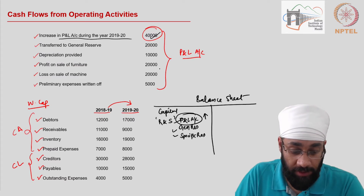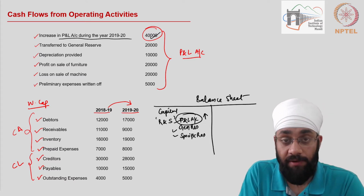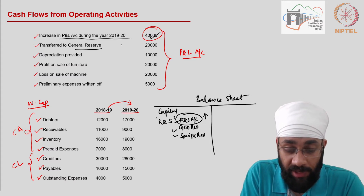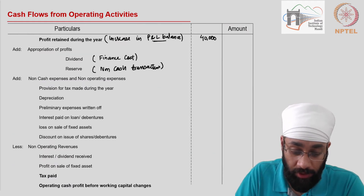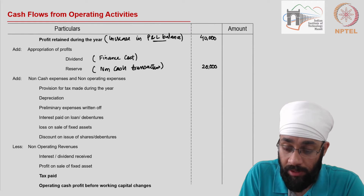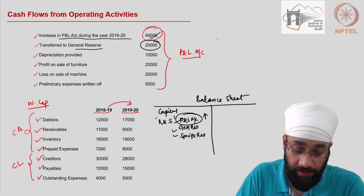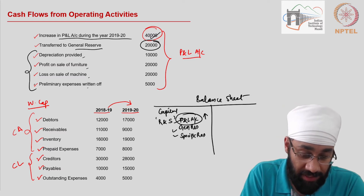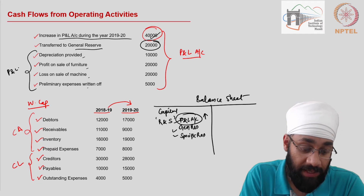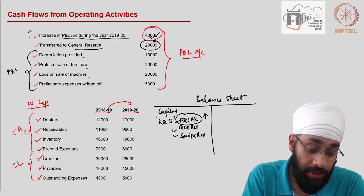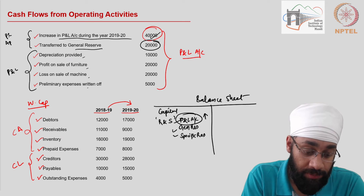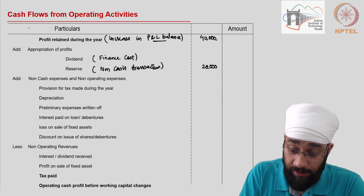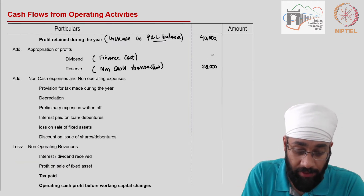Looking at the list, we pick the relevant details. Transfer to general reserve is 20,000, so this 20,000 has to be added back to the increase in profit during the year. There are no dividends in this problem. Then we move straight to depreciation, profit on sale, and preliminary expenses. These items are typically shown in the P&L appropriation account.